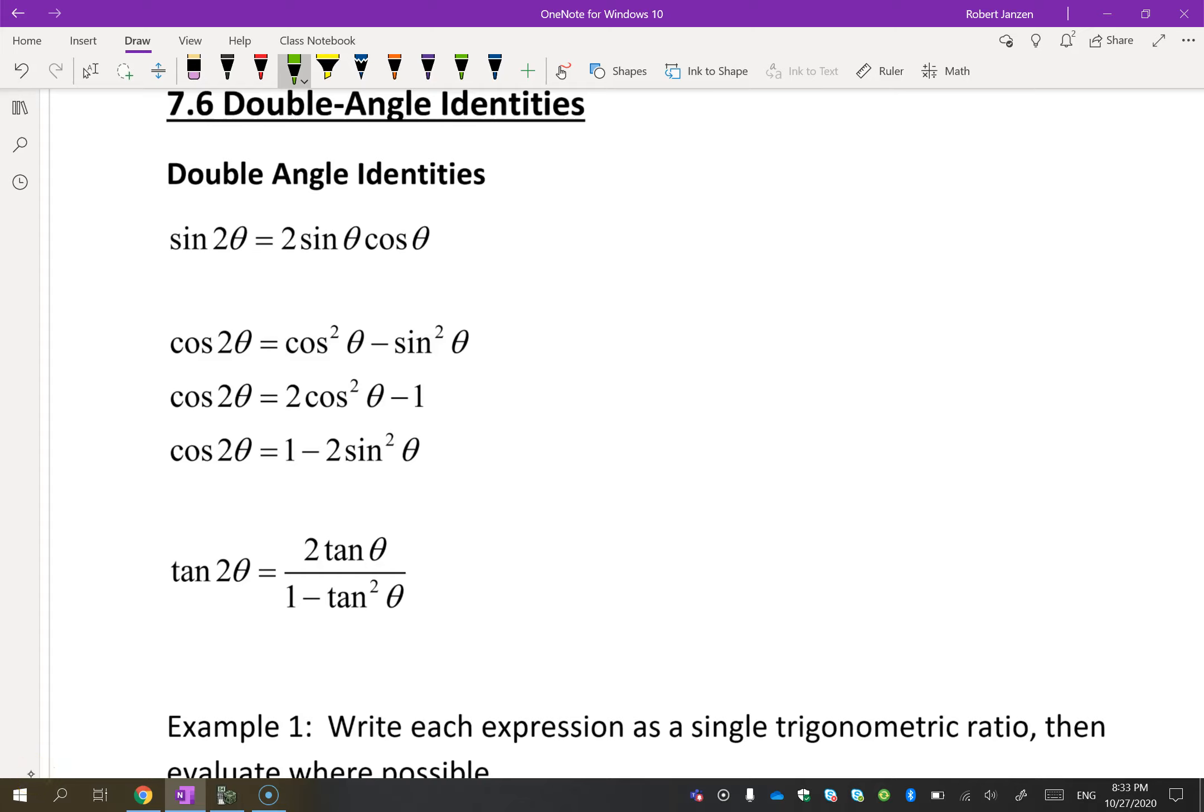In this lesson we're going to look at the last five identities. These are called double angle identities. Similar to the addition and subtraction identities, there's quite a few of them. They're also on the formula sheet, but you'll notice that there are three for cosine, while only one for sine and for tan.